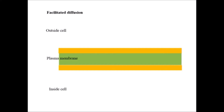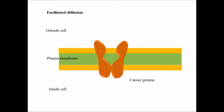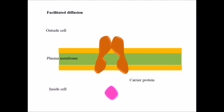In facilitated diffusion, there are carrier proteins which facilitate the transportation of certain molecules. What happens is: when a molecule binds to the carrier protein, it leads to a conformational change in the carrier protein. It changes configuration in such a way that the molecules which need to be transported across the plasma membrane can easily pass through.